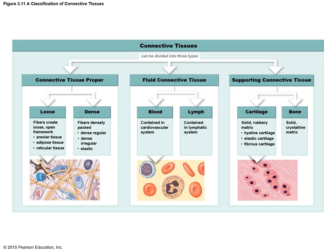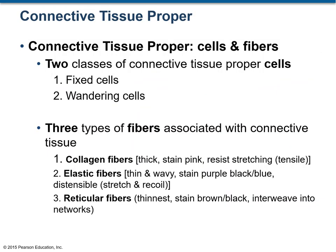This figure shows the classification of connective tissues that we just discussed. We'll start with connective tissue proper. It is made up of cells and the ECM has extracellular protein fibers. There are two types of cells: fixed cells, which stay at one place, and wandering cells, which can freely move around. The extracellular protein fibers in the ECM are of three types: collagen fibers, elastic fibers, and reticular fibers.